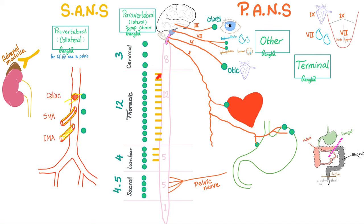Let's talk about sympathetic. What do you mean by thoracolumbar? It starts in the thoracic or lumbar spinal cord, and then relays in the paravertebral ganglia or sometimes in the prevertebral ganglia.